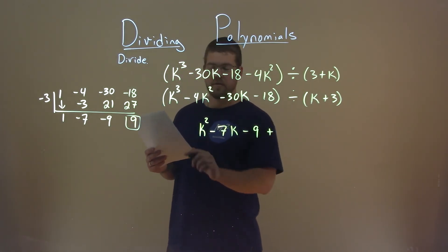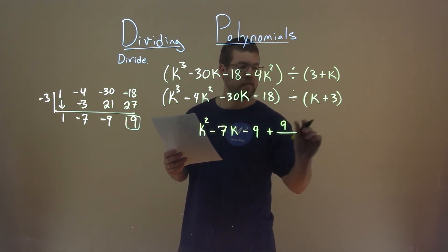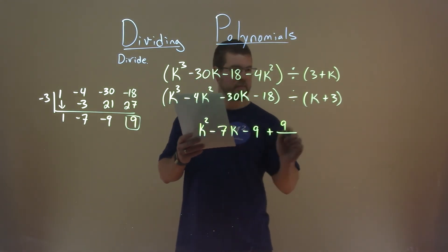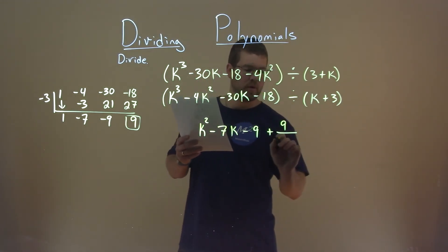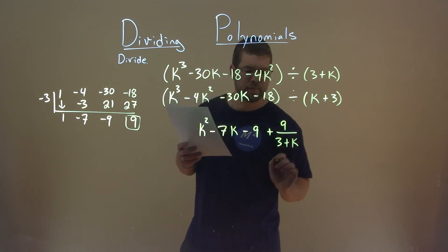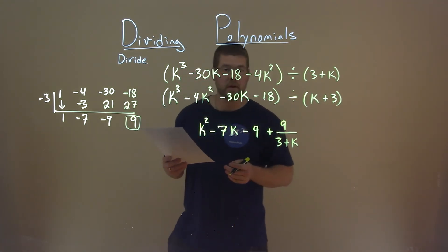Our remainder is plus a 9, positive 9, divided by that k plus 3. Or if we want to go back to our original, we can write it as 3 plus k. And there we have our final answer.